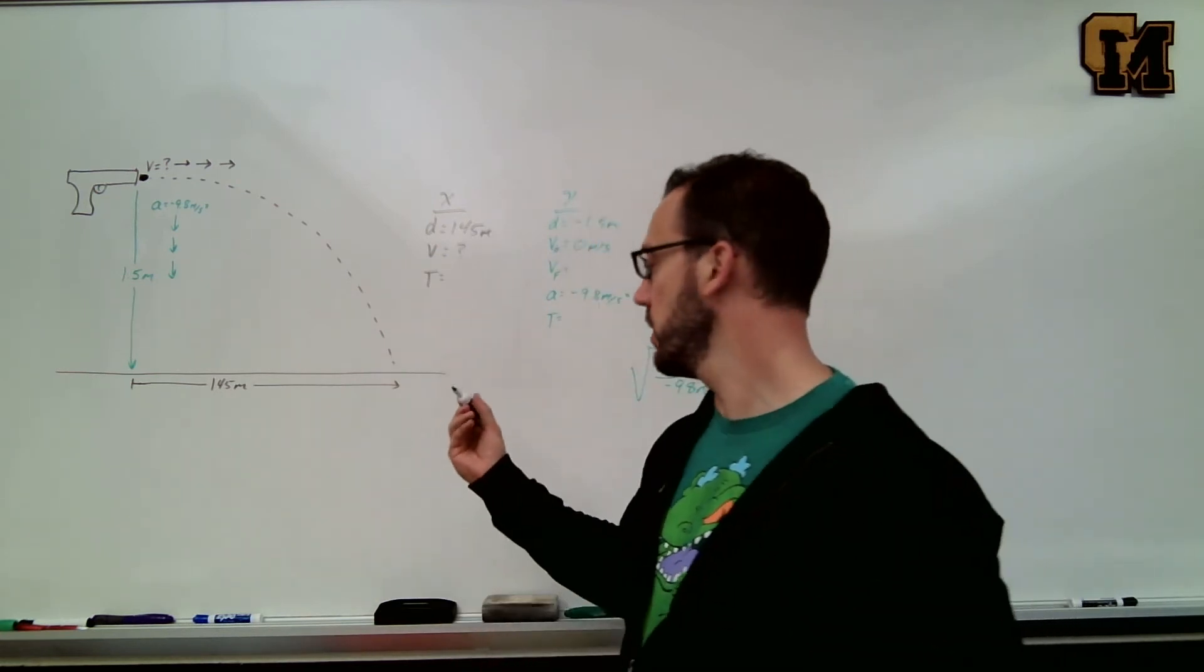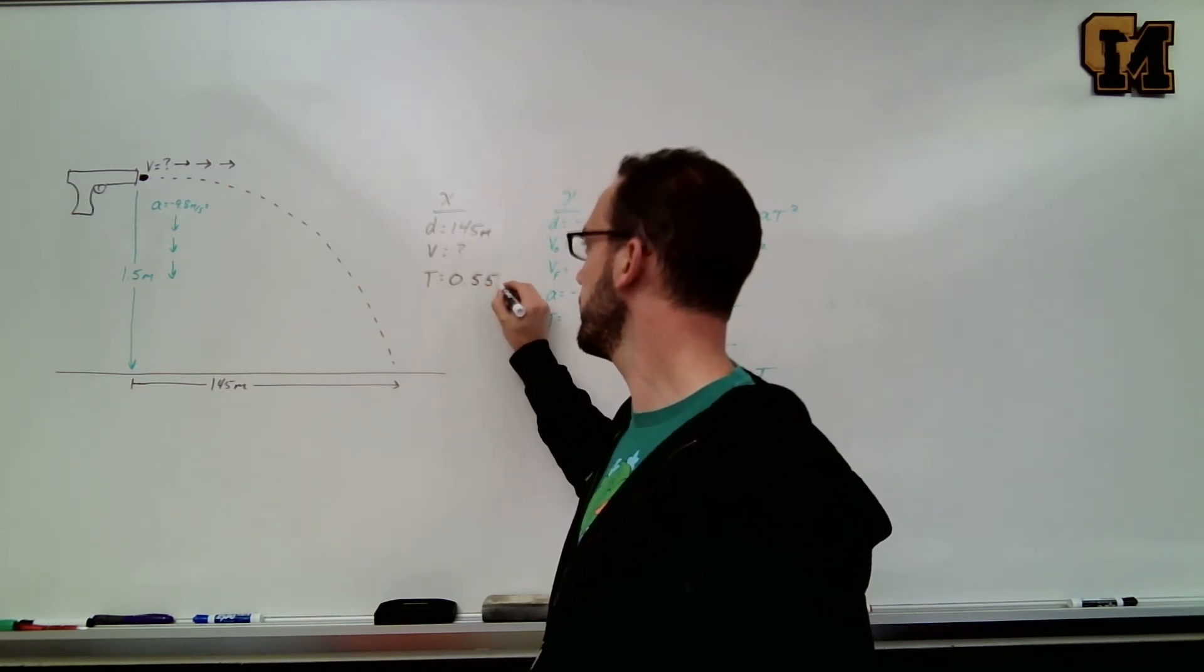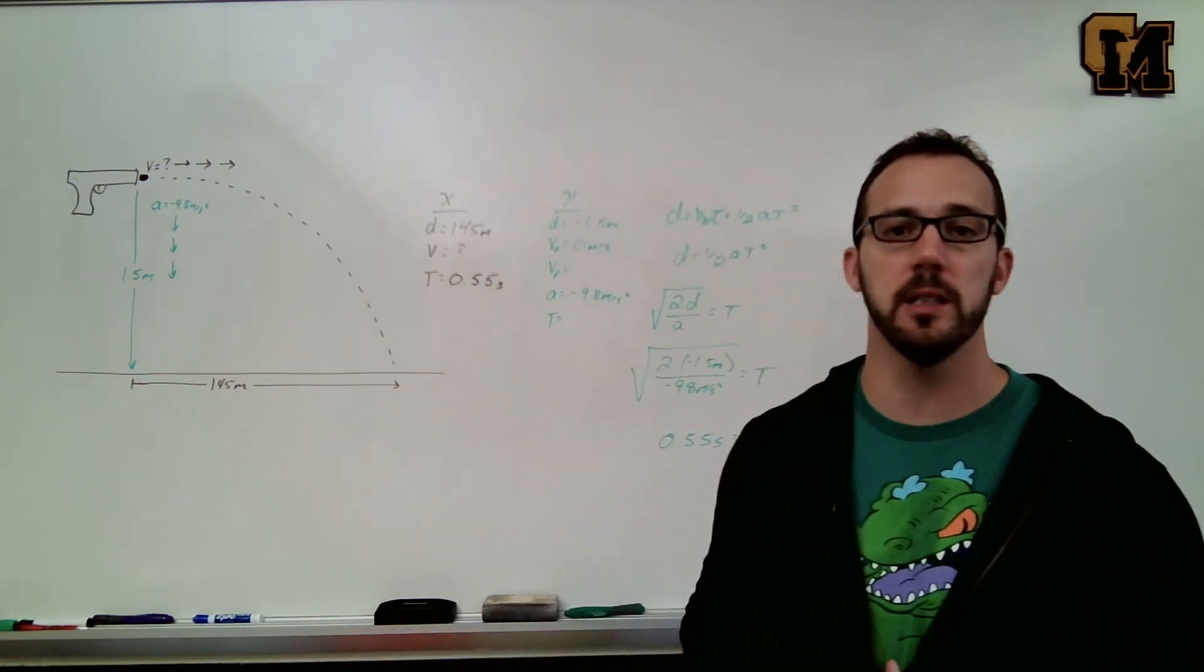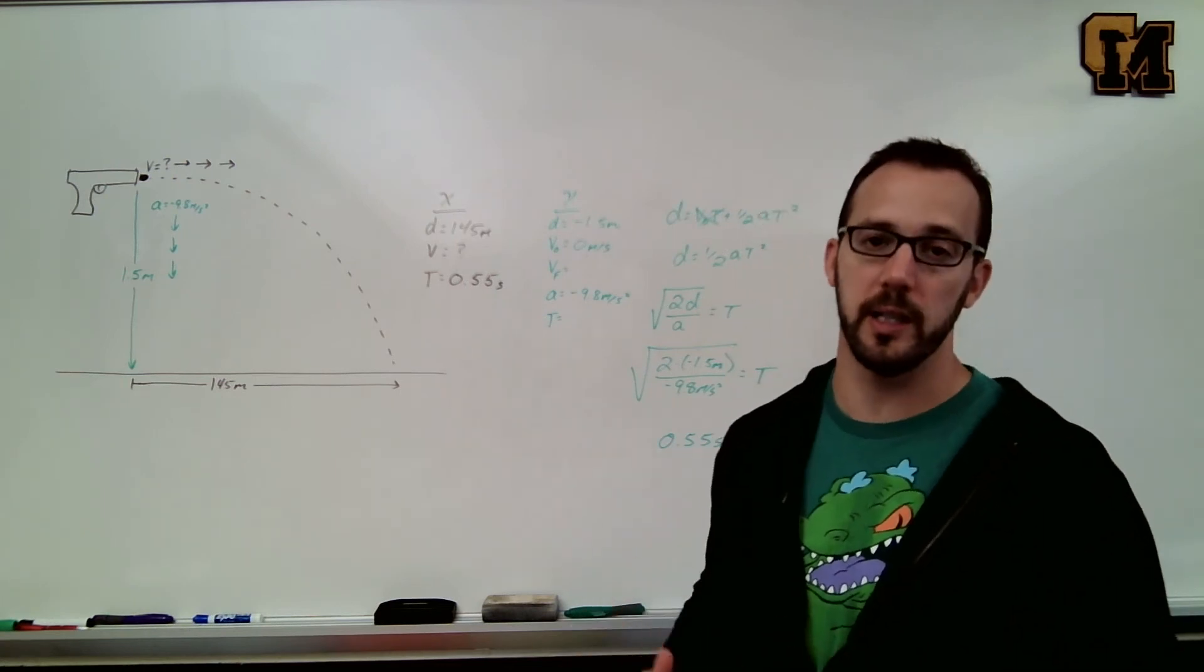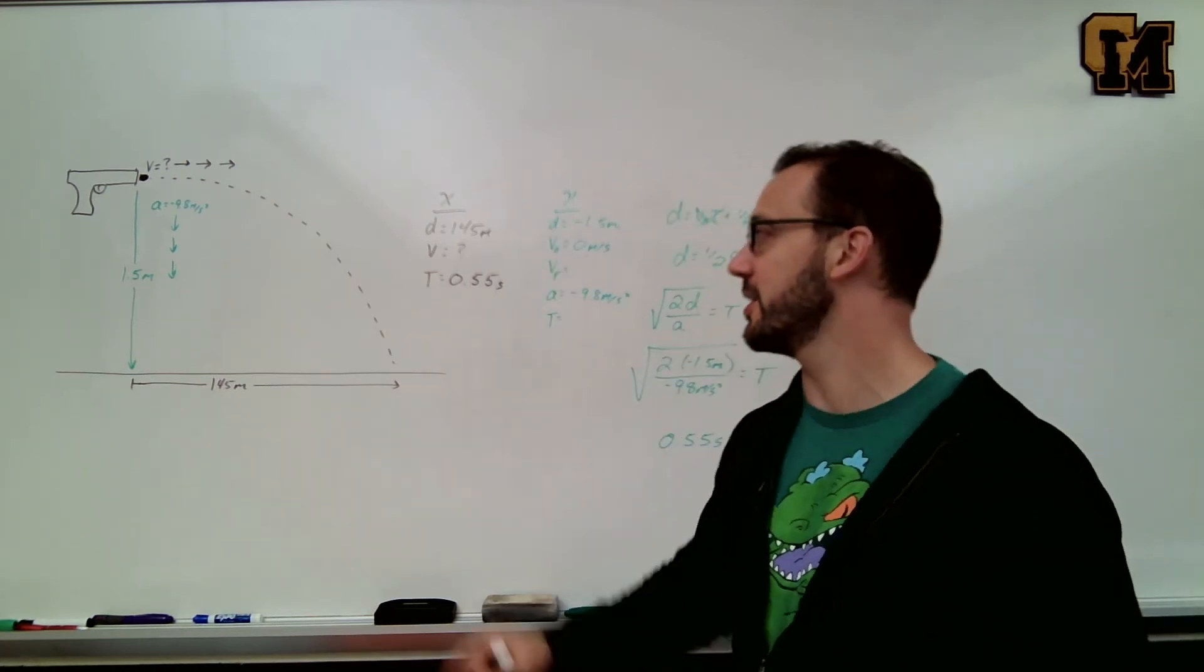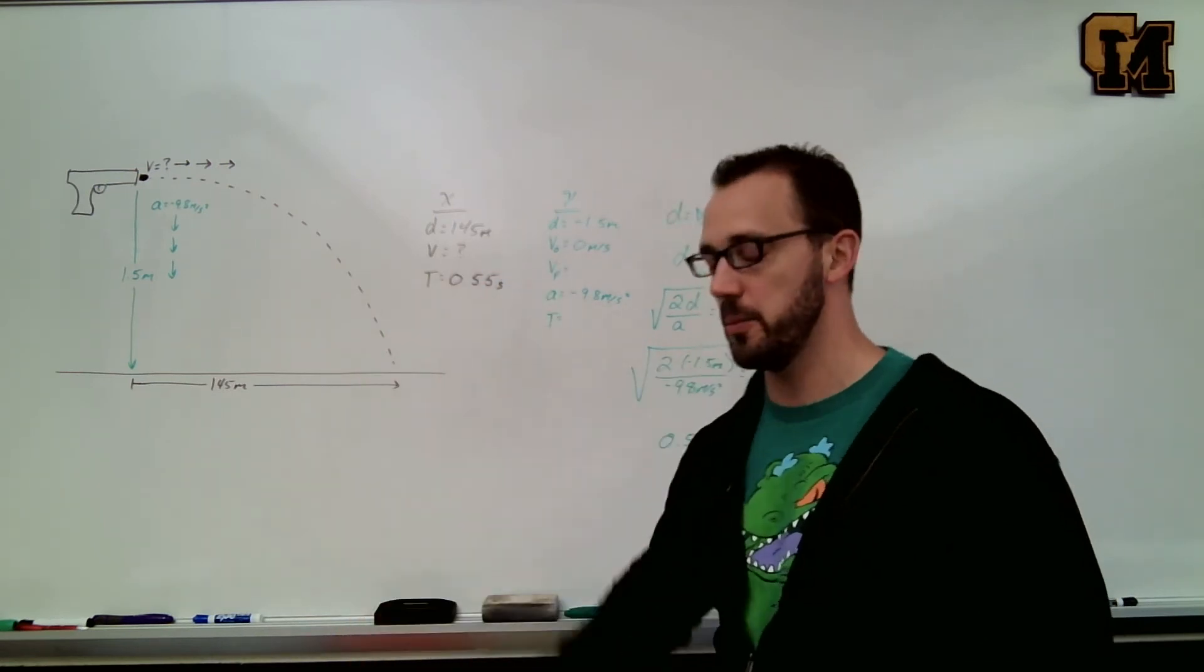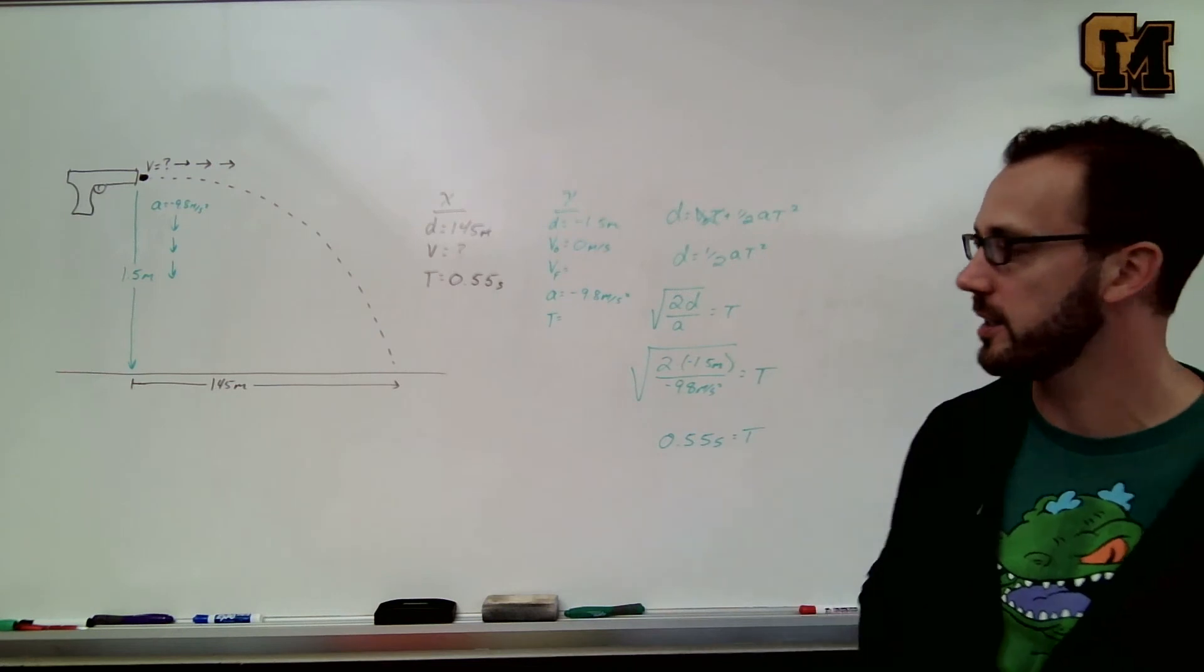So now in our x direction, we know how long the bullet's going to be in the air, which is 0.55 seconds. Now the question is, how far does it go during that time? I'm sorry, we know how far it goes, 145 meters. How fast is it going to go the 145 meters in 0.55 seconds? That's what we're trying to solve.